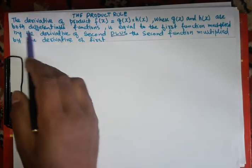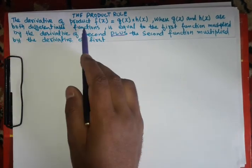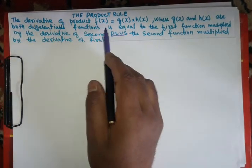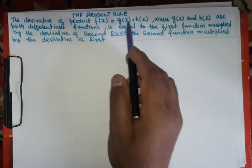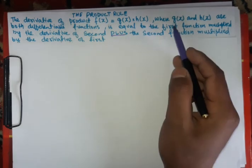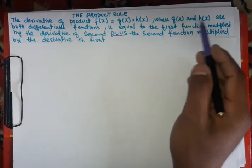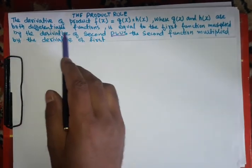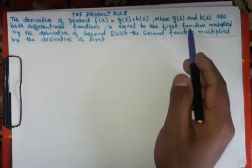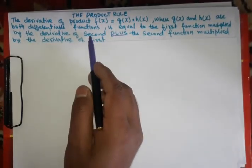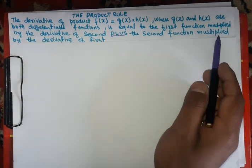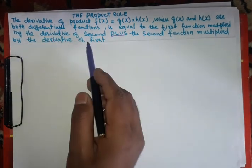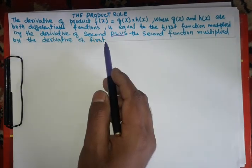The product rule says: the derivative of a product f(x) equal to g(x) times h(x), where g(x) and h(x) are both differentiable functions, is equal to the first function multiplied by the derivative of the second, plus the second function multiplied by the derivative of the first function.